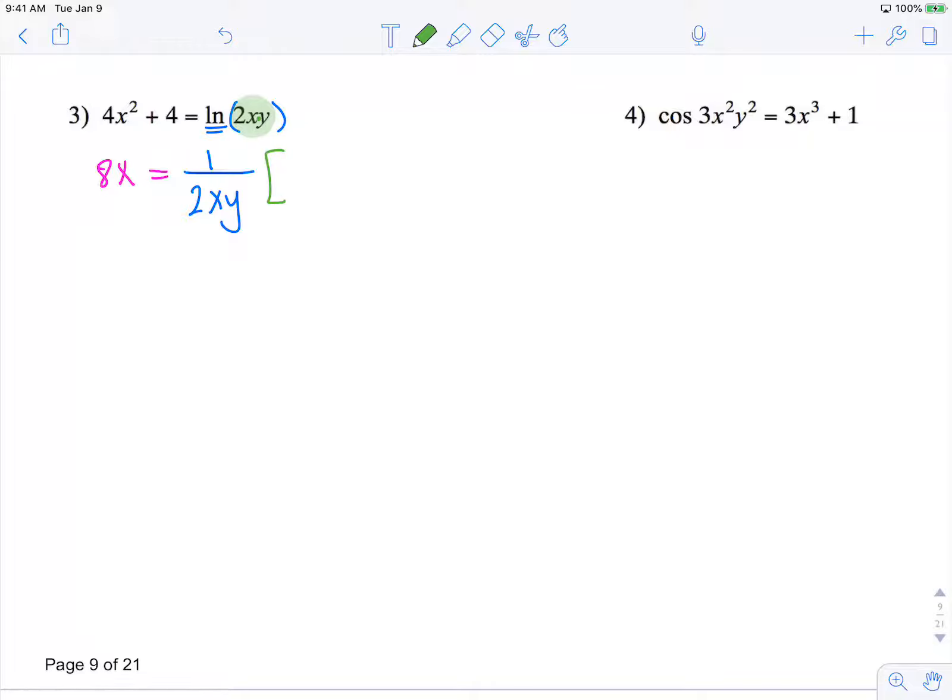times y. So the derivative of 2x is 2 times y plus 2x times the derivative of y, dy/dx.